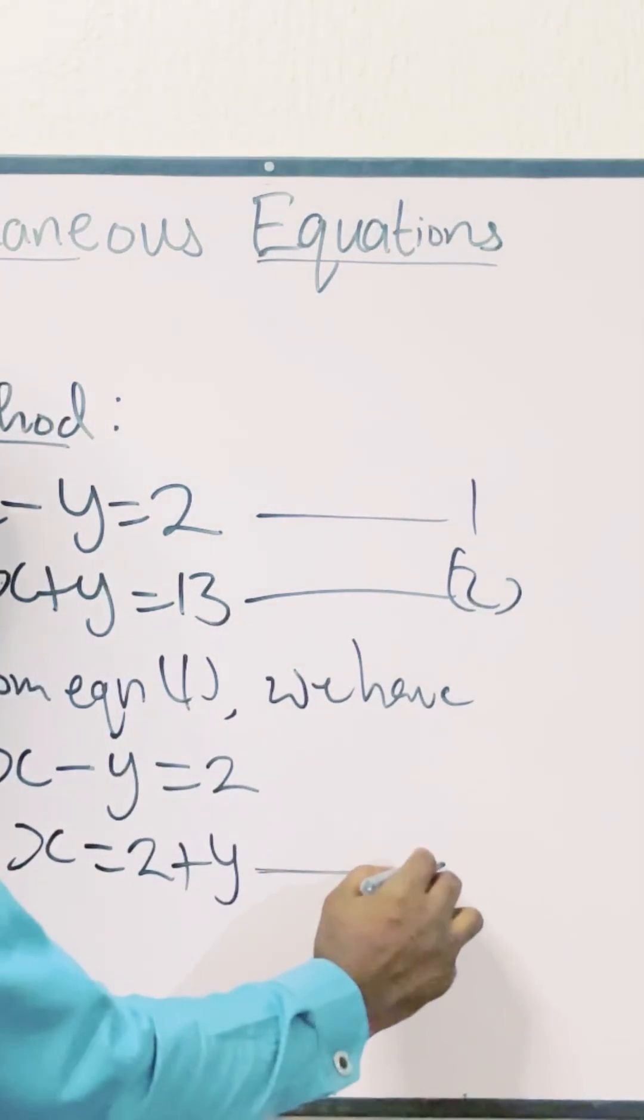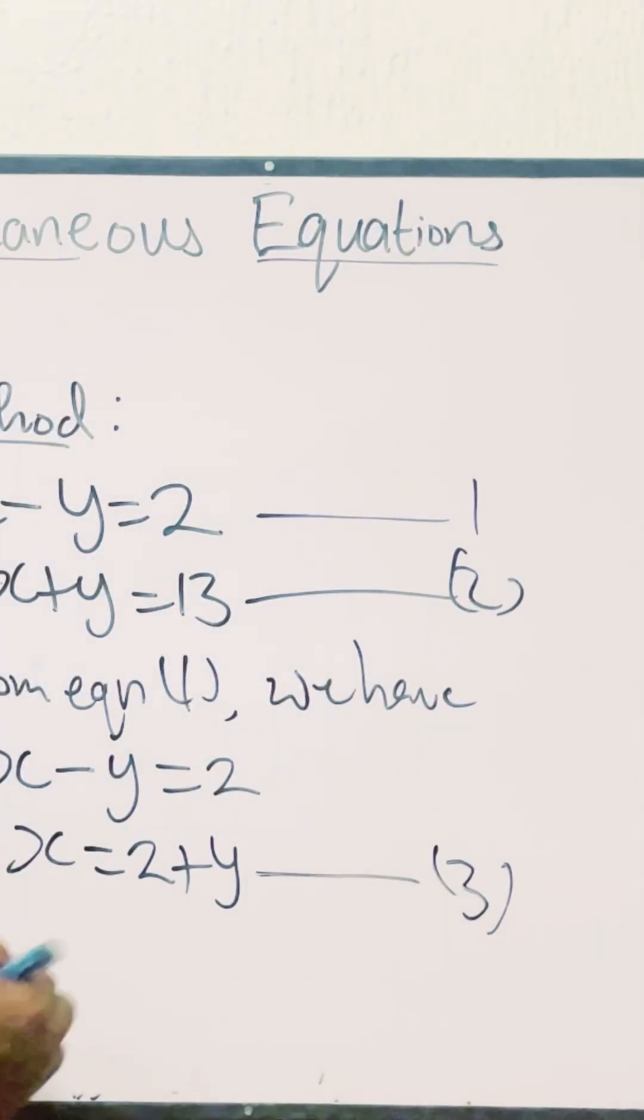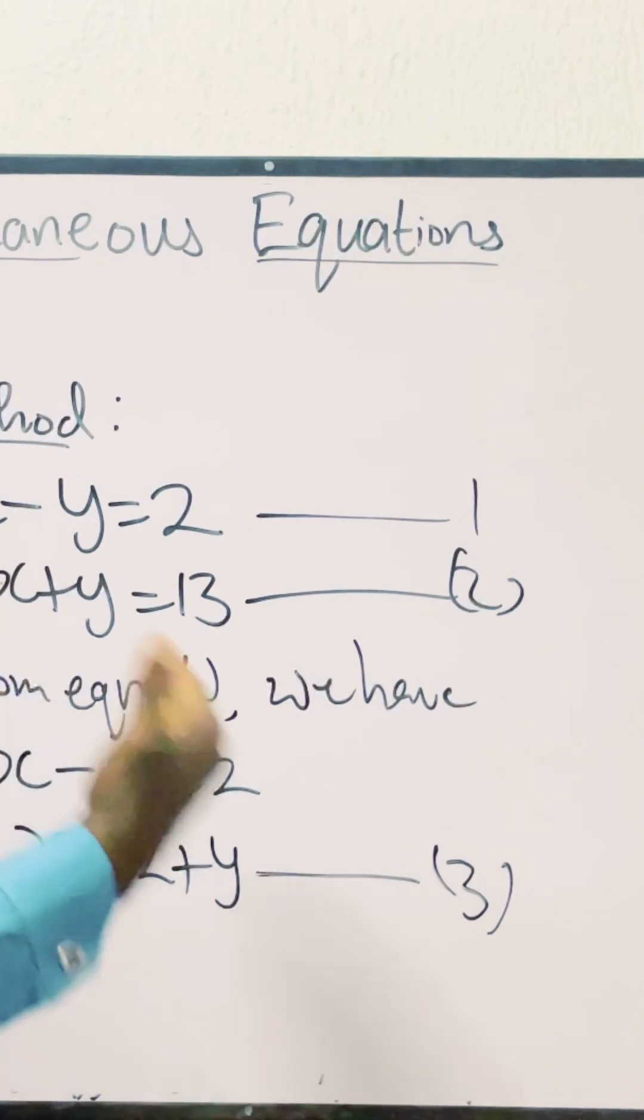This naturally becomes your equation 3. Now, since 2 plus y becomes a value for x, it means that we are now going to take 2 plus y and substitute it in equation 2 anywhere we see x.